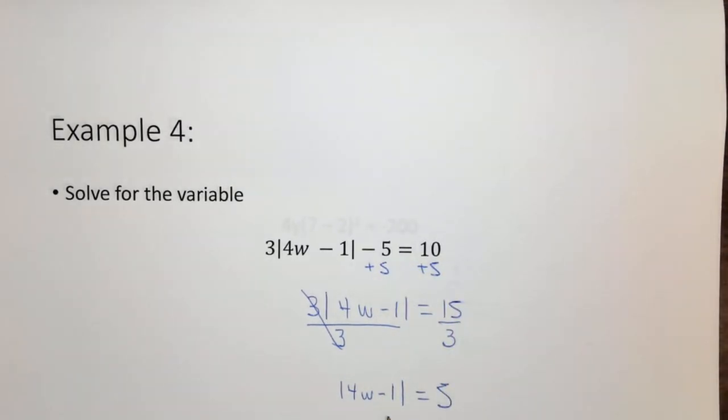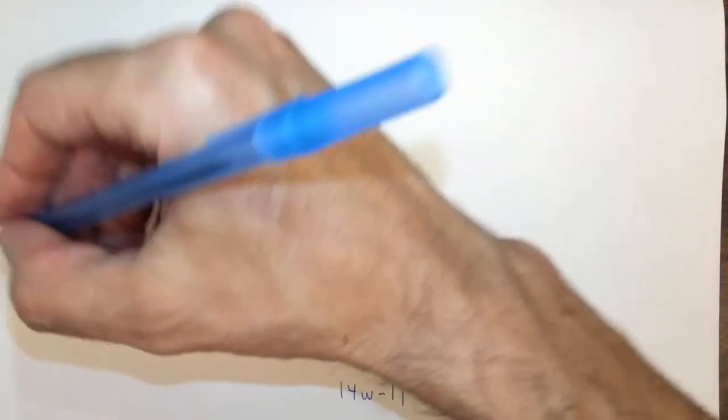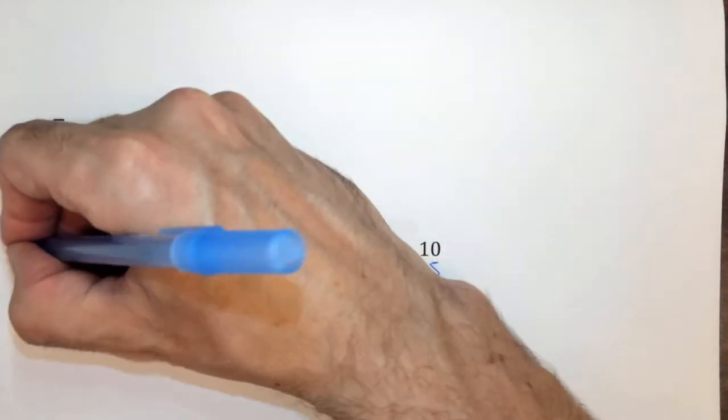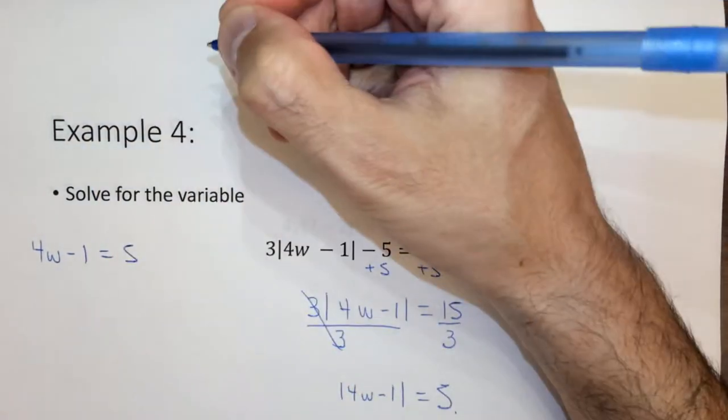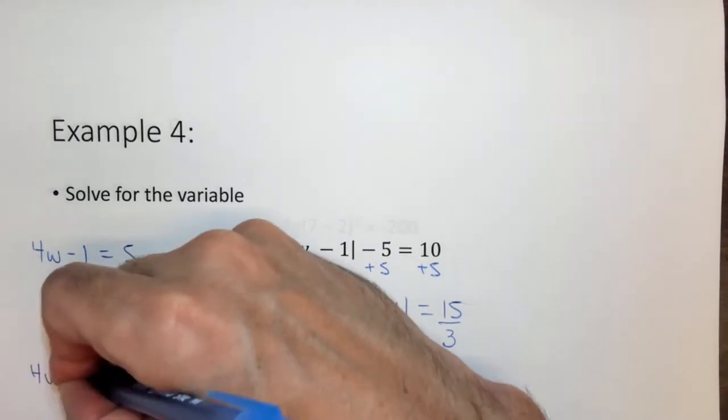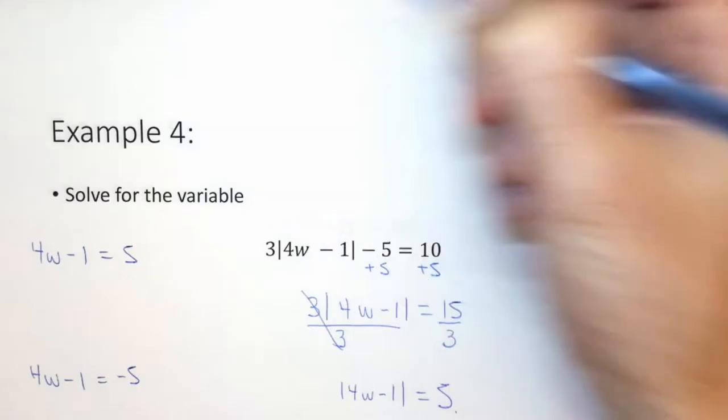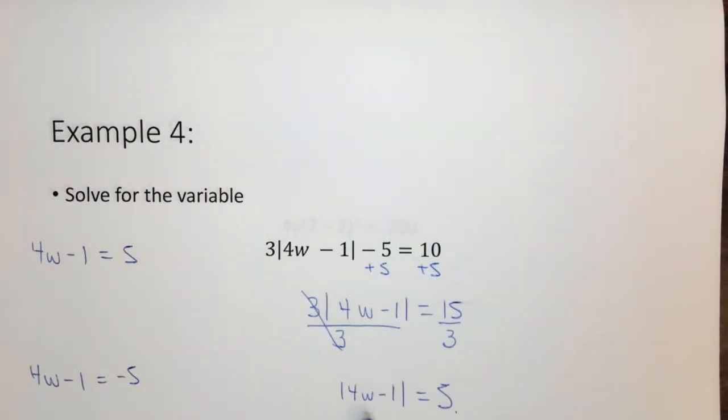Well since this is an absolute value, 4w minus 1 could equal 5, or it could equal negative 5, because it would still equal 5 if it's an absolute value. So we need to solve this twice. One case where 4w minus 1 equals 5, and the other case where 4w minus 1 equals negative 5. We have to solve it twice because if 4w minus 1 equals negative 5, we'll still get 5 because it's an absolute value.